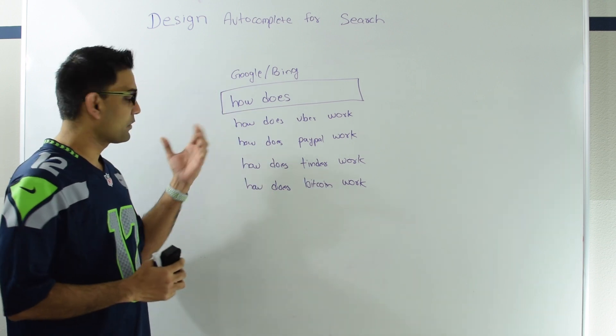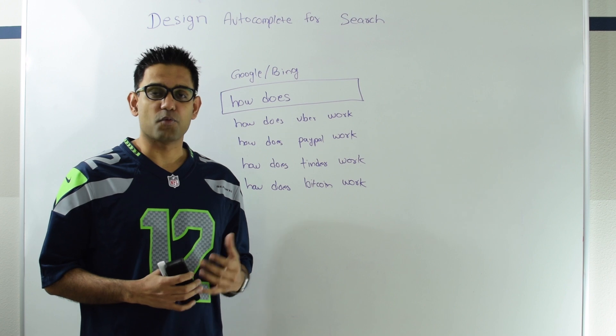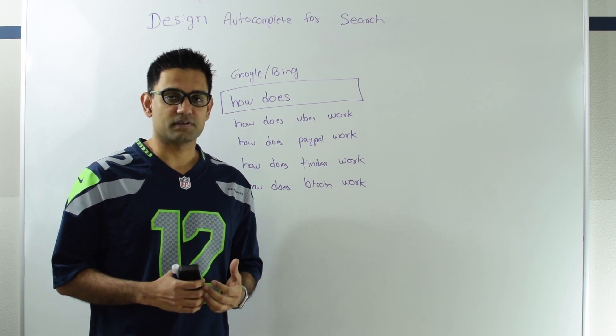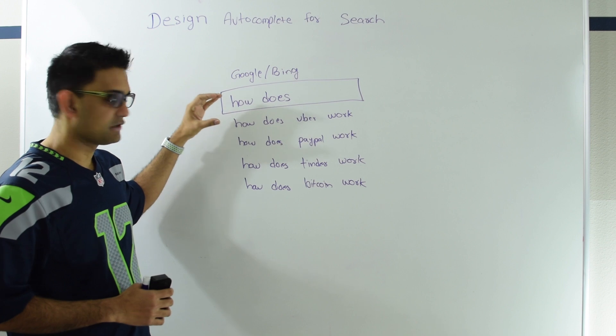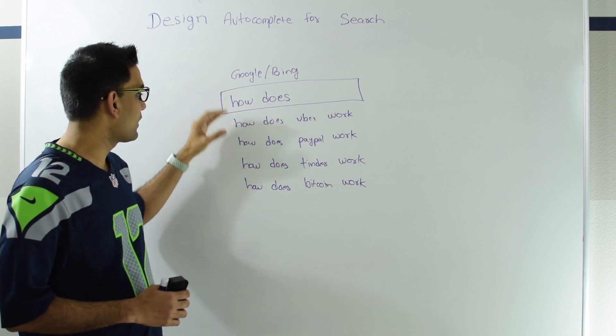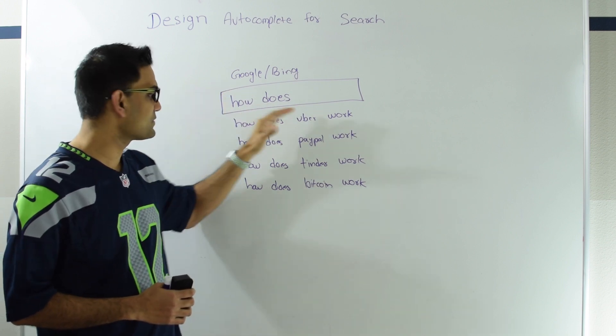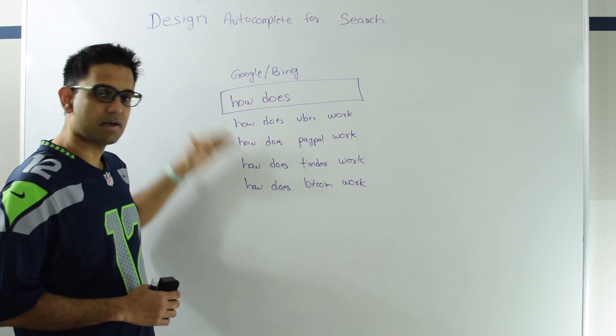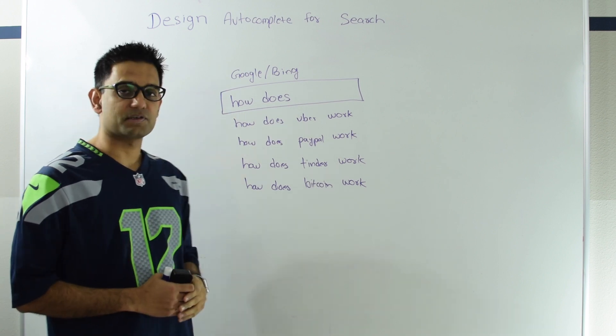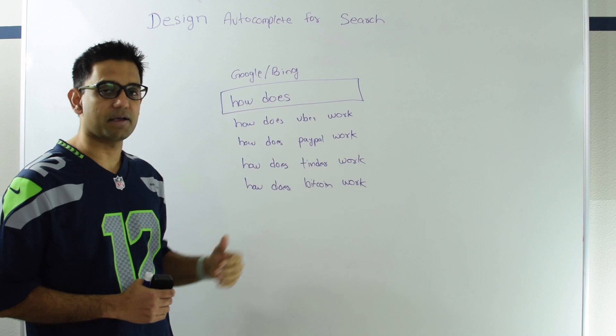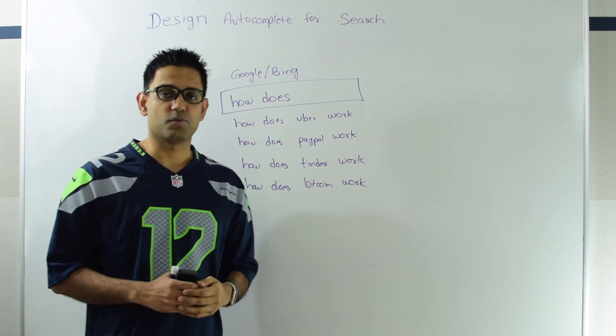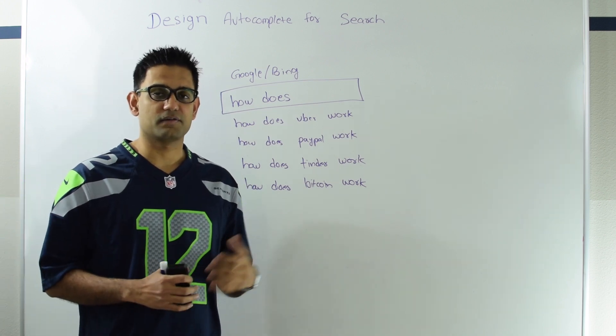So what is autocomplete feature? I'm pretty sure most of you must have already used this, but just to recap, if you go to Google or Bing search engine and start typing, for example "how does", then it will immediately show you a list of options. You could select these options or continue typing, and based on that it will return the search results.